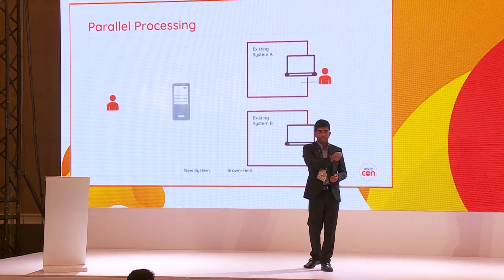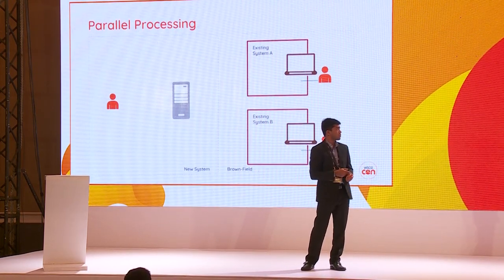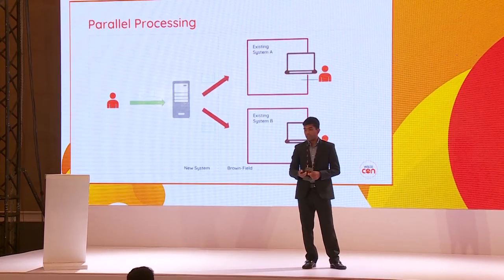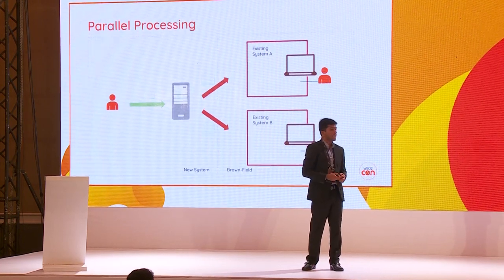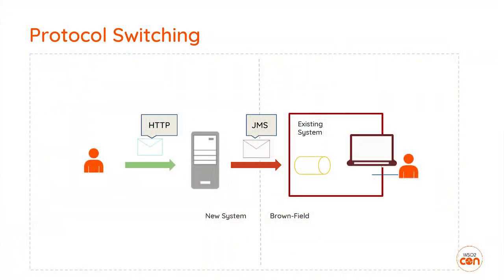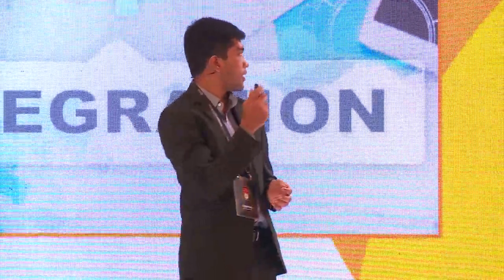This is a non-functional requirement mainly used to reduce latencies between request and response. We have two systems which we can call in parallel — like taking quotations from two systems simultaneously and responding back to the client. If you use parallel processing, the latency will be the maximum latency among all systems. But if you do it synchronously, it will be the sum of the latencies. So parallel processing is very important when you want to improve performance and reduce latency.